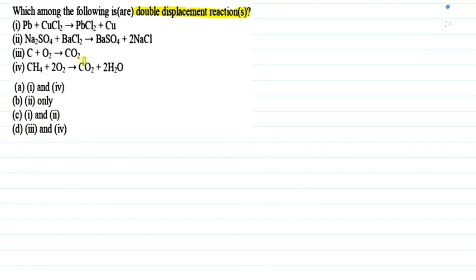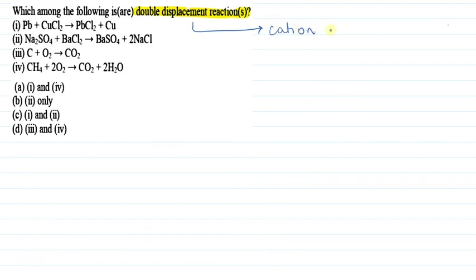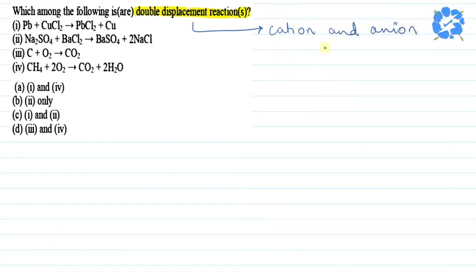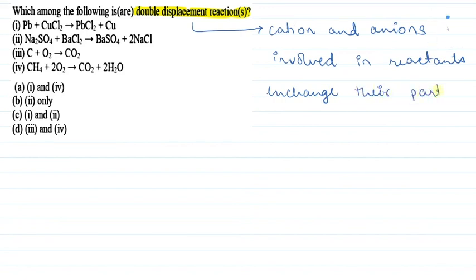First of all, we need to have a basic understanding about what a double displacement reaction is. A double displacement reaction is a reaction in which the cations and anions involved in the reactants exchange their partners, or you can say counter ions exchange their partners.